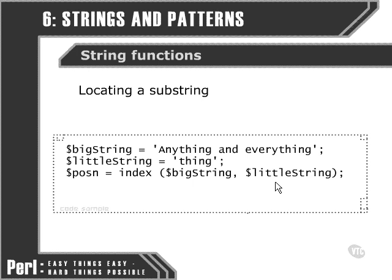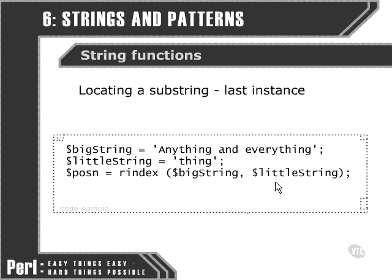If we wanted to find the last instance of that particular substring within the main string, we could use a different function, and that's rindex — for reversed index. So this time, we're finding the last instance of the 'thing' substring within our larger string.